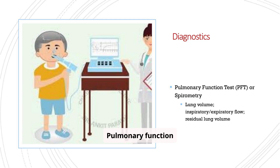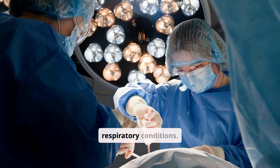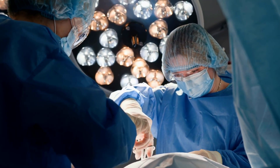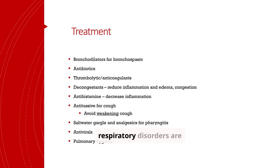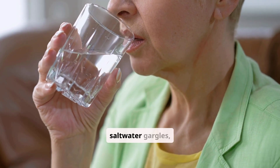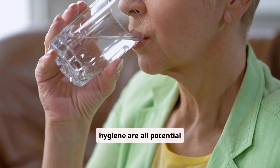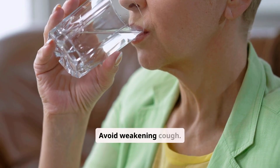Pulmonary function tests, or PFTs, are used to measure lung volume and airflow. Spirometry is a common type of PFT, and these tests can help diagnose and monitor respiratory conditions. Treatment options for respiratory disorders include bronchodilators, antibiotics, thrombolytics, decongestants, antihistamines, antitussives, saltwater gargles, antivirals, and pulmonary hygiene. Avoid weakening the cough.